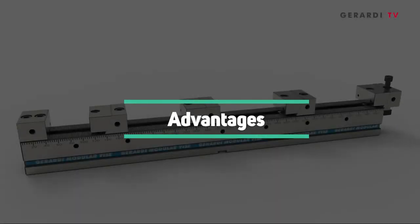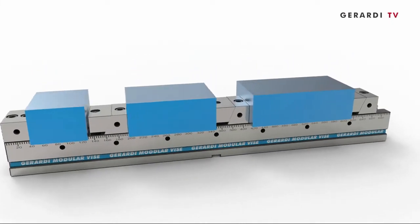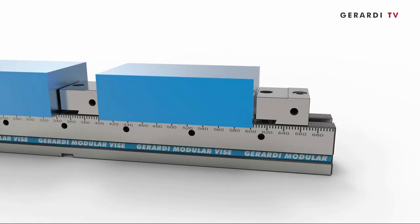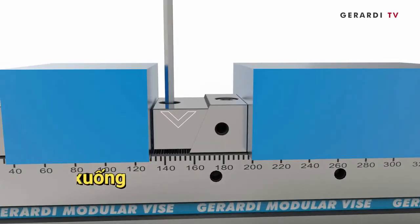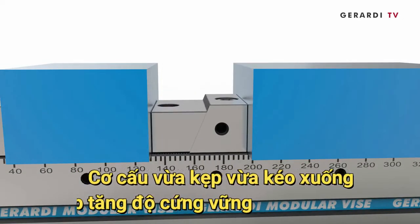The multi-flex vise series is a totally new concept of modular clamping system, able to maximize the machine table capacity and increase its productivity, reducing setup times to the minimum.